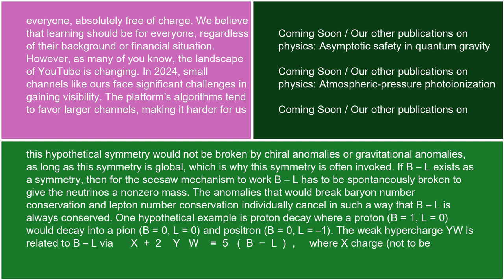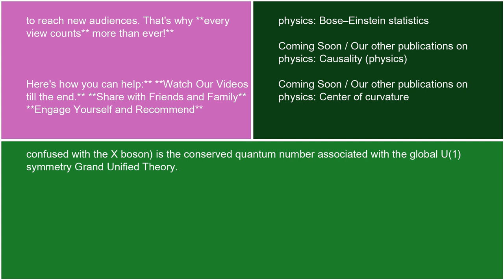The weak hypercharge YW is related to B-L via X + 2YW = 5(B-L), where X charge — not to be confused with the X boson — is the conserved quantum number associated with the global U(1) symmetry of grand unified theory.